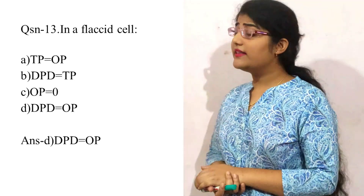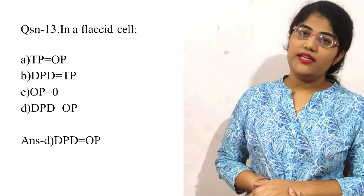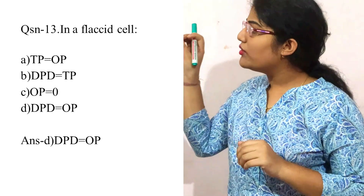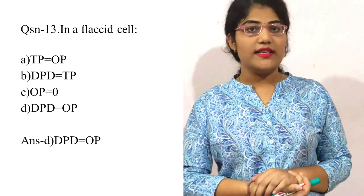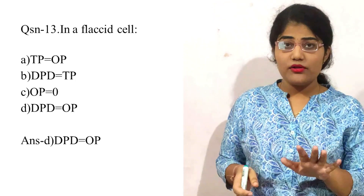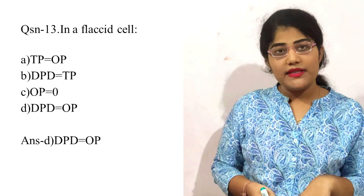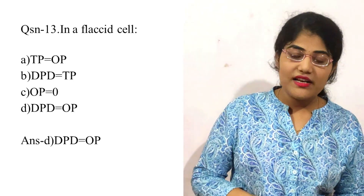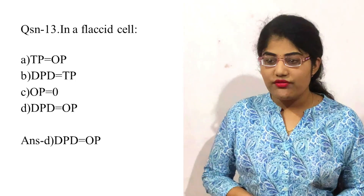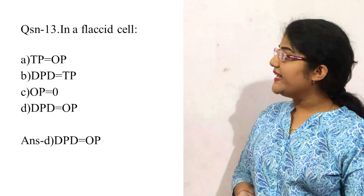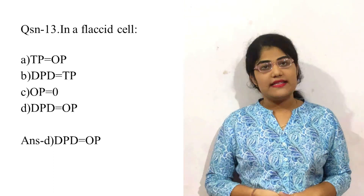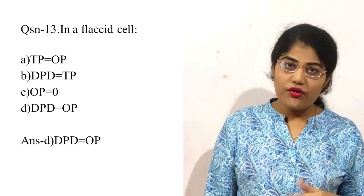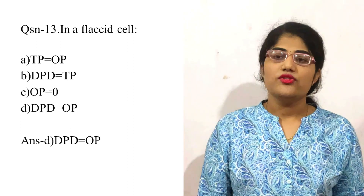Question number thirteen: in a flaccid cell, which equation applies? This is a direct question. Turgid cell and flaccid cell are both cases of diffusion pressure deficit. In a flaccid cell, DPD is equal to OP. The correct option is D. This is because in a flaccid cell the turgor pressure is always zero, and so DPD equals OP.